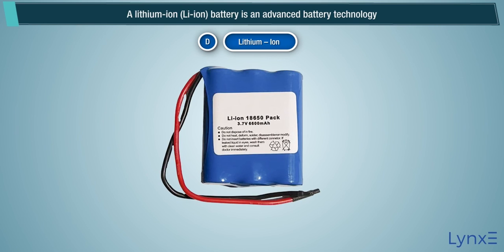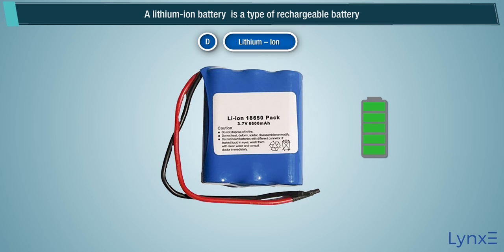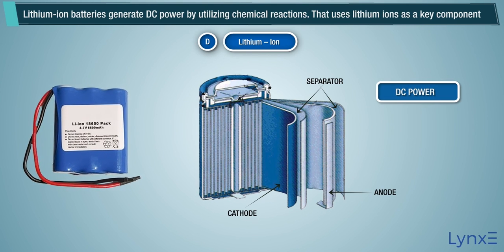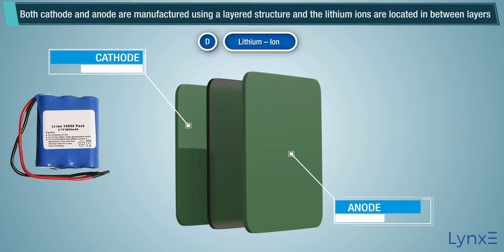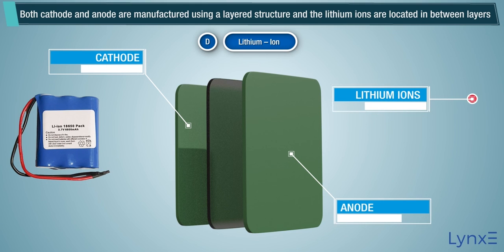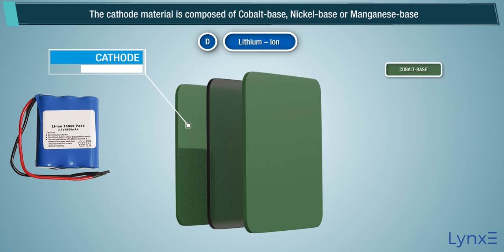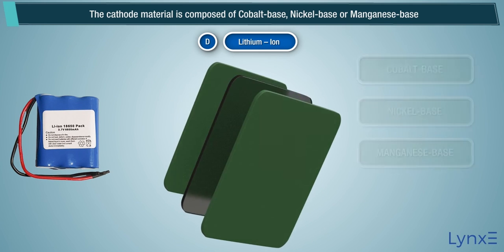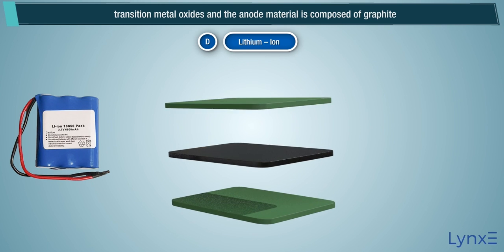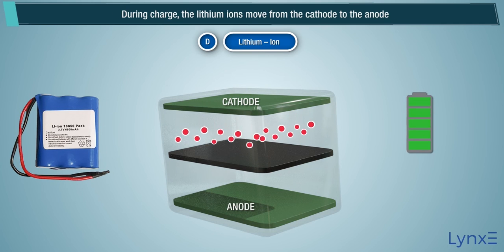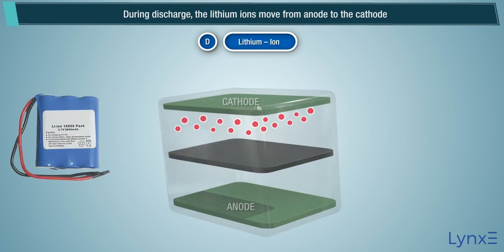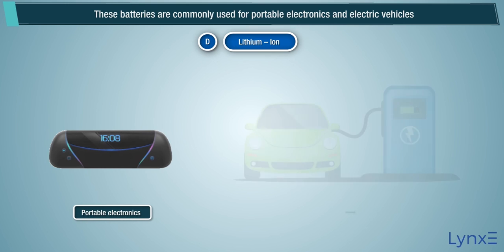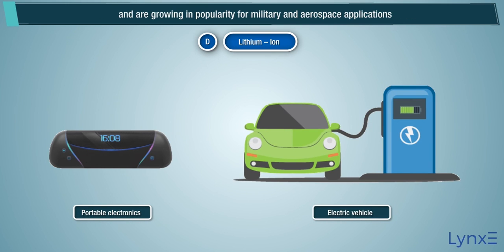Lithium ion battery. A lithium ion battery is an advanced battery technology and a type of rechargeable battery. Lithium ion batteries generate DC power by utilizing chemical reactions that use lithium ions as a key component. Both cathode and anode are manufactured using a layered structure, and the lithium ions are located in between the layers. The cathode material is composed of cobalt-base, nickel-base, or manganese-base transition metal oxides, and the anode material is composed of graphite. During charge, the lithium ions move from the cathode to the anode. During discharge, the lithium ions move from the anode to the cathode. These batteries are commonly used for portable electronics and electric vehicles, and are growing in popularity for military and aerospace applications.